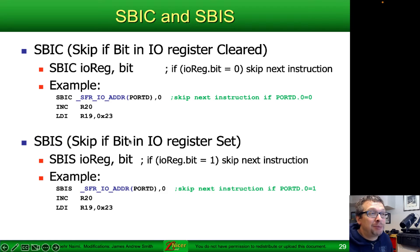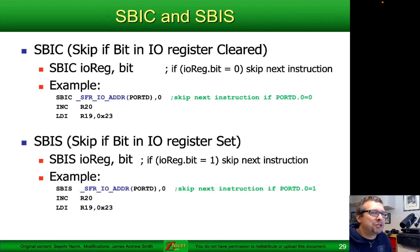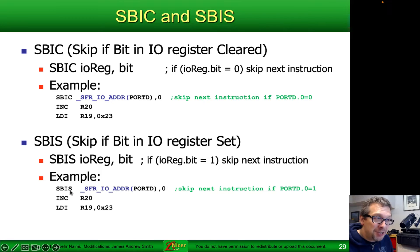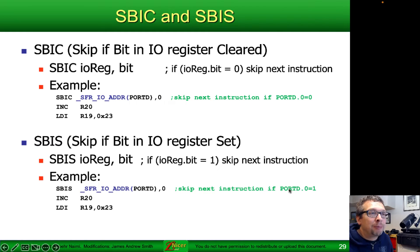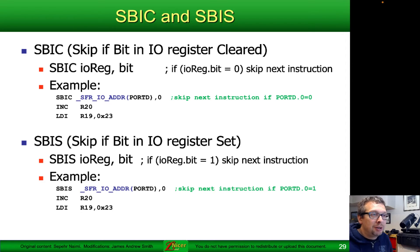With SBIS — skip if bit in IO register is set — we check whether a particular bit is equal to one. Looking at port D bit zero: if port D bit zero is equal to one, we skip the next instruction (the increment) and go directly to the load immediate of 23 into register R20. This is a simple conditional branching mechanism when testing just a single bit.